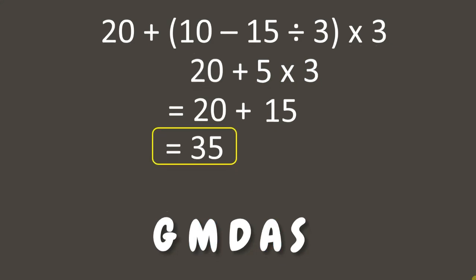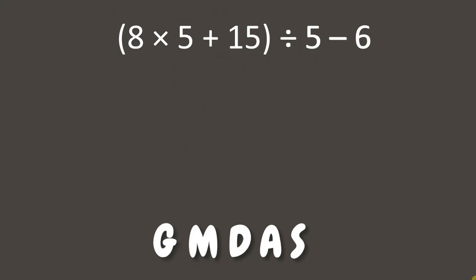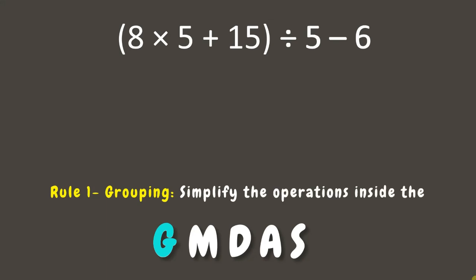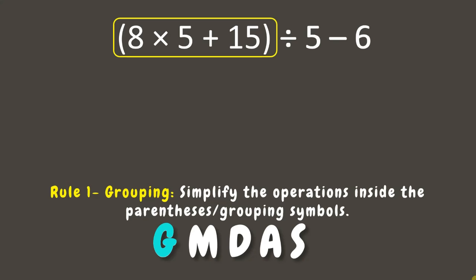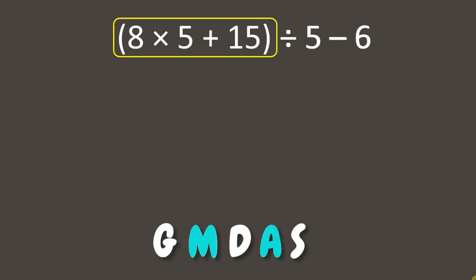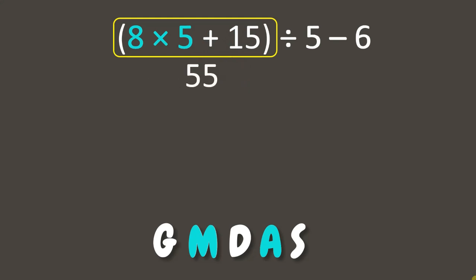Moving on to our last example. Again, let's first solve everything inside the grouping symbol. Here we have expressions grouped in parentheses. Let's solve 8 times 5 plus 15. We can see two operations: multiplication and addition. According to the rule, we multiply first — 8 times 5 equals 40 — then add 15, resulting in 55. Now we have 55 divided by 5 minus 6.